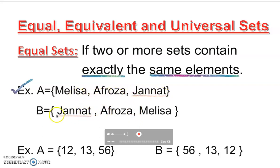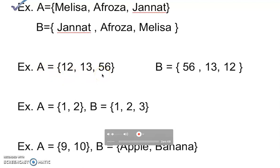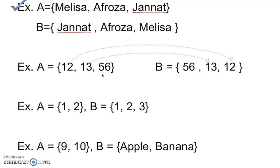An equal set means you have the same elements and the same count — whether it's Melissa, Afroza, Jannath, or the same fish, or three animals in a different order, it's still equal. For example, set A equals {12, 13, 56}. Checking the next set: it has 12 — yes; 13 — yes; 56 — yes. Everything matches exactly, so we call it an equal set.